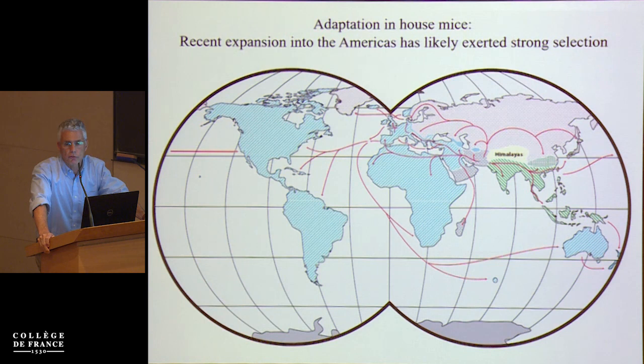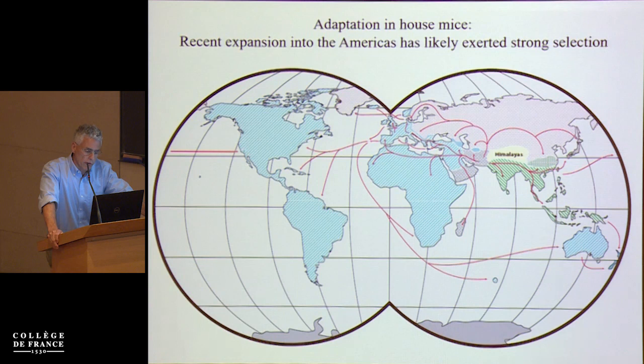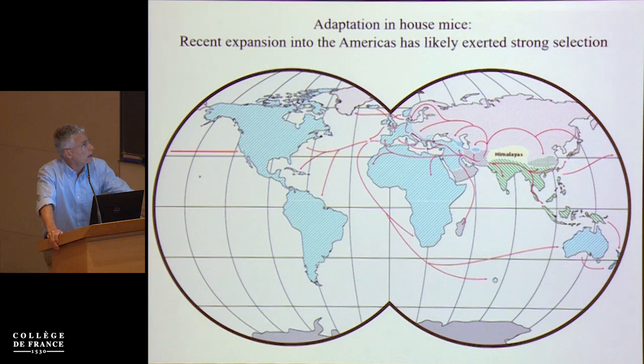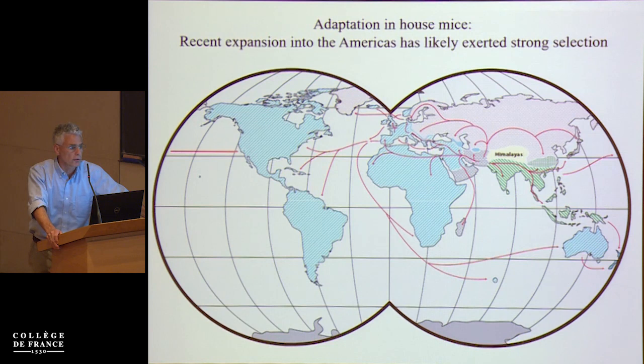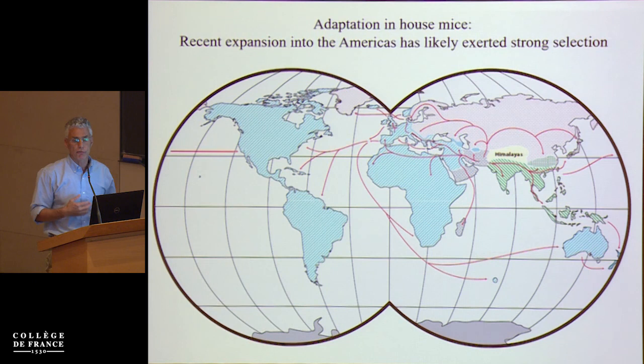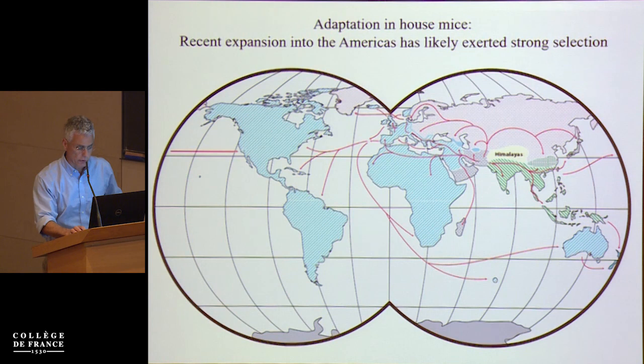I've been interested in using mice as a model to explore this idea. House mice of the subspecies Mus musculus domesticus are native to western Europe — originally from the Middle East, they moved into western Europe with the spread of agriculture about 5,000 years ago. In the last few hundred years they've been spread around the world. When mice historically adapted to a Mediterranean climate land in places like Canada or upstate New York, those populations are very far from their optimum and experience strong selection.